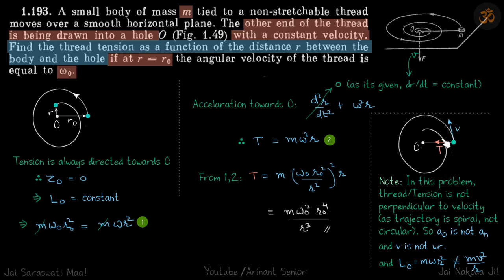A about O is not a_n because normal acceleration means the acceleration perpendicular to the direction of velocity. So a_O is not a_n and therefore v is not omega r. Angular momentum about O we can write as m omega r square, this is correct, but we cannot write it as m v square by r. So good learnings in this problem.